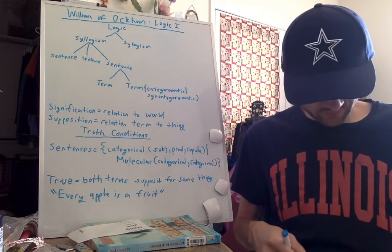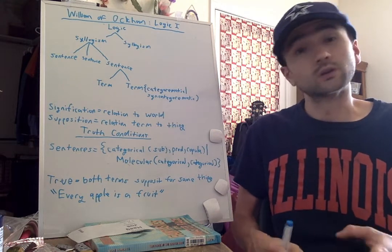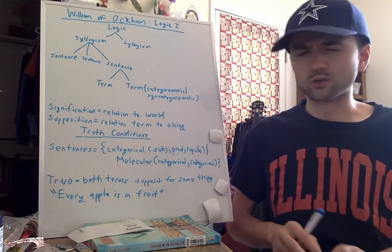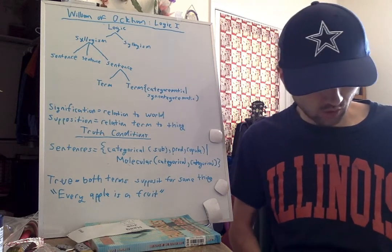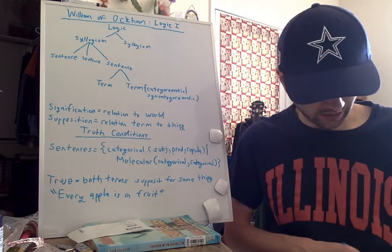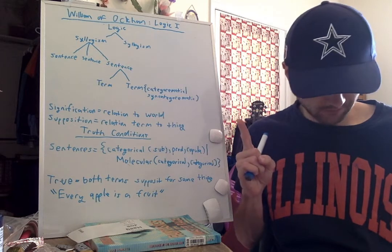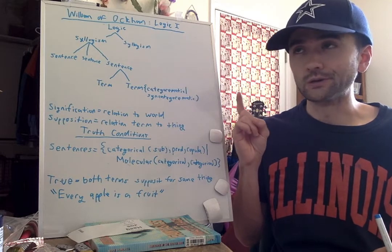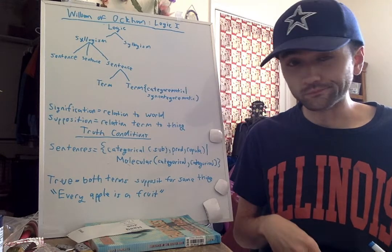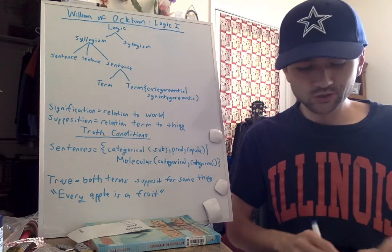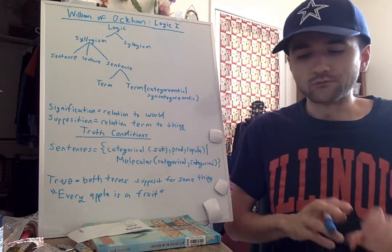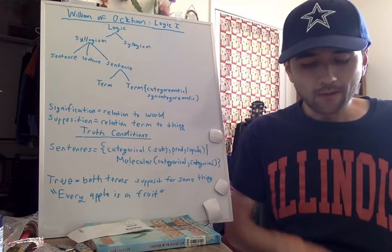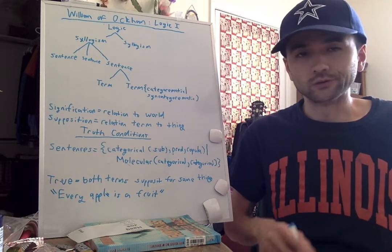The simplest categorical sentence is a discrete term, a common term, and a copula. An example is 'Socrates is a man.' The truth condition is based on supposition. As I mentioned, the truth conditions based on supposition are whether the terms supposit for the same thing.